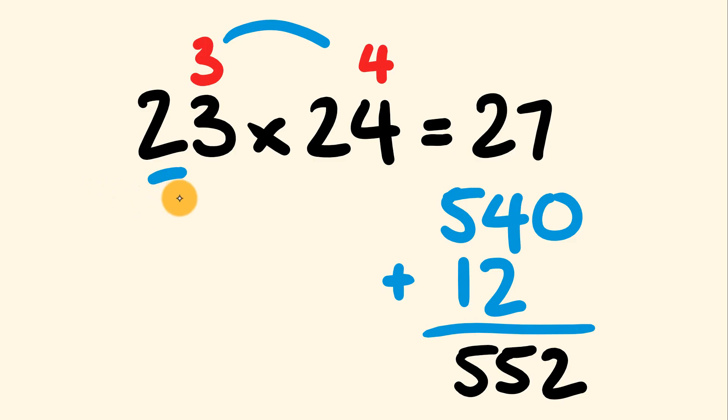So those steps once again. First thing, this works for numbers that have the same tens value. Like we have the 20s here. We look at the units. And then we have either 23 plus 4 or 24 plus 3, which equals 27. And now multiply it by that tens value. 27 multiplied by 2 is 54. Make that a tens, 540. And then we just multiply those two units together. 3 times 4. We add that on, we've got our answer. Seems like a few steps. Don't worry, we'll go through a few examples.